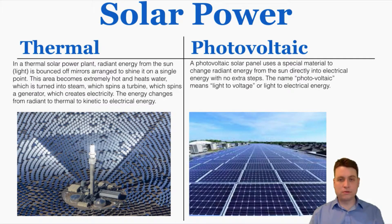These are pictures and definitions of both. In a thermal solar power plant, radiant energy from the sun is bounced off of mirrors arranged to shine on a single point. You can see at the top of that tower, there's a very bright point where all those mirrors are aiming the sun to shine. This area becomes extremely hot and heats water, which is turned into steam, which spins a turbine, which spins a generator, which creates electricity. The energy changes from radiant to thermal to kinetic to electrical energy.